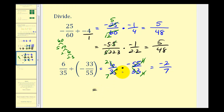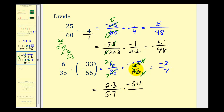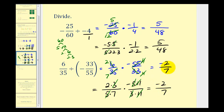We'll also show the prime factorization method. The prime factorization of six is two times three, thirty-five is five times seven, fifty-five is negative five times eleven, and thirty-three is three times eleven. We can see all the common factors: three over three simplifies to one, five over five simplifies to one, and eleven over eleven simplifies to one. So the numerator is two times negative one, giving negative two, over seven. The result is the same.